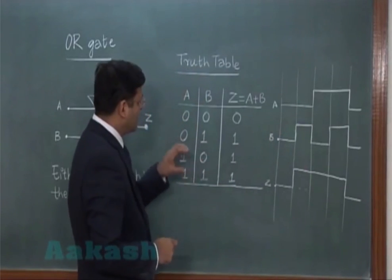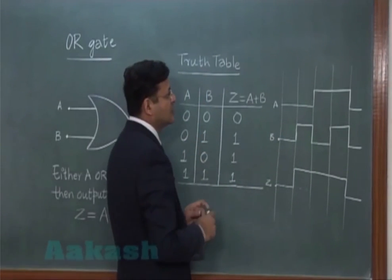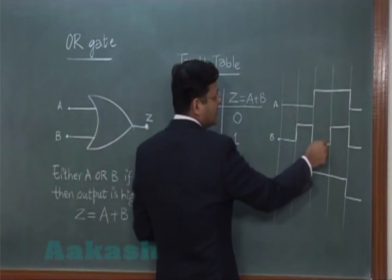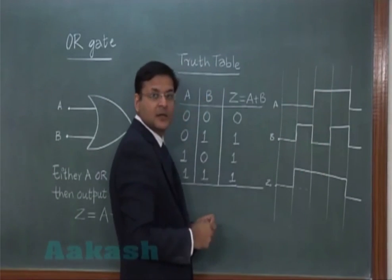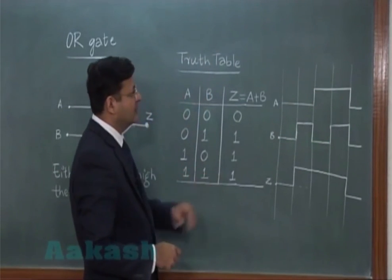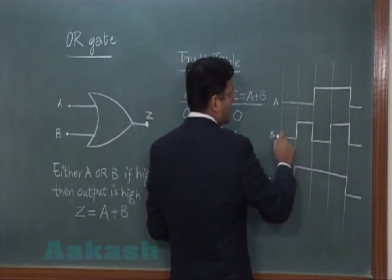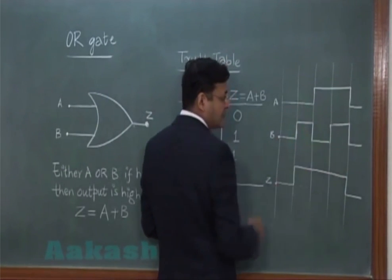In the third case, you have 1, 0, 1. So you can see A is 1 higher, then B is 0, output again is 1. In the last case, you have 1, 1, 1. That means, if the input is higher 1, B is also 1, then output is also 1.